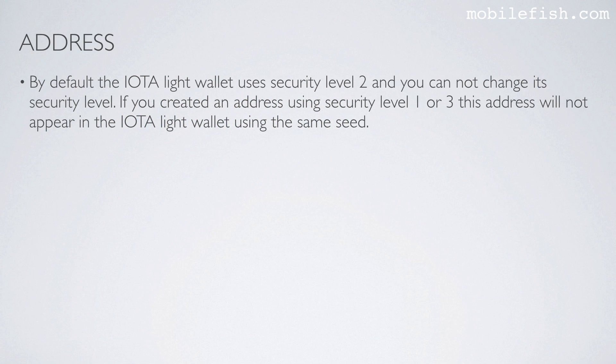By default the IOTA Lite wallet uses security level 2, and you cannot change its security level. If you created an address using security level 1 or 3, this address will not appear in the IOTA Lite wallet using the same seed.